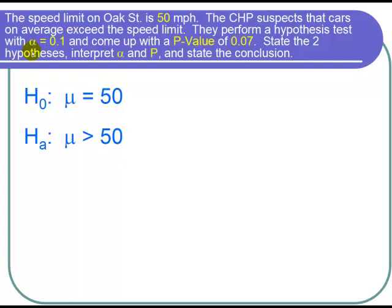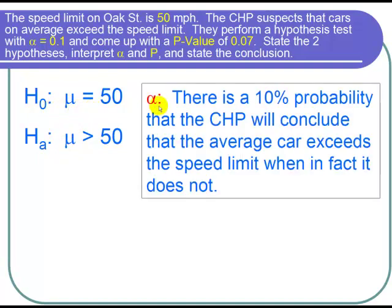Next we need to interpret our alpha. Alpha is 0.1 and alpha is always a probability of a type 1 error, or the probability that we reject the null hypothesis when in truth the null hypothesis is correct. So we interpret alpha by saying there is a 10% probability that the CHP will conclude that the average car exceeds the speed limit when in fact it does not, when in fact H naught is true.